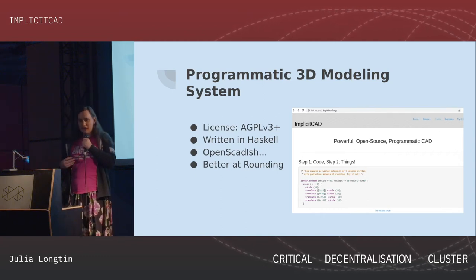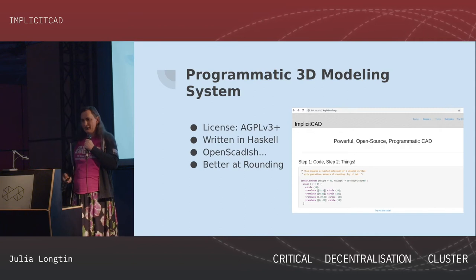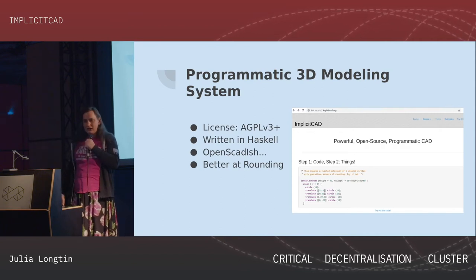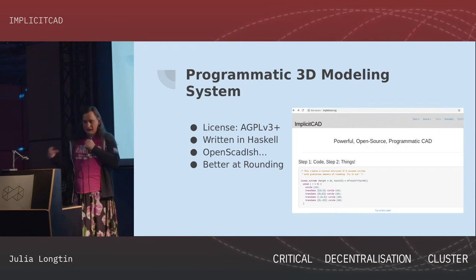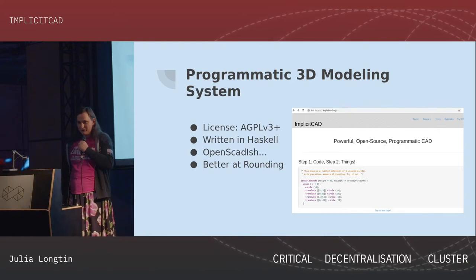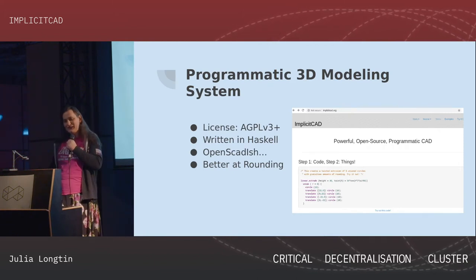ImplicitCAD is kind of an OpenSCAD-ish language. If you've used 3D modeling tools before, you've probably looked at OpenSCAD code, which looks kind of like C — you produce objects with it. It's got your traditional brackets and semicolons and all that, which some people don't really like about C, but that is the way it is.